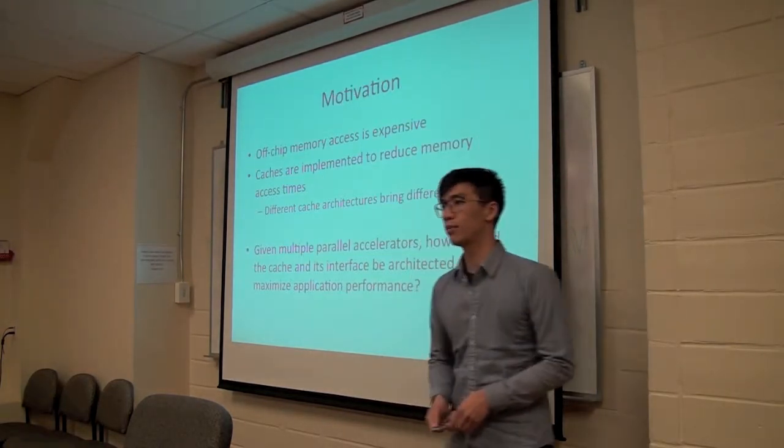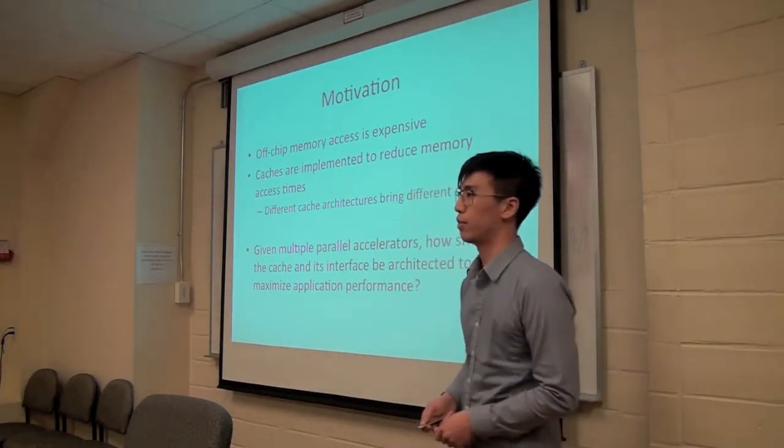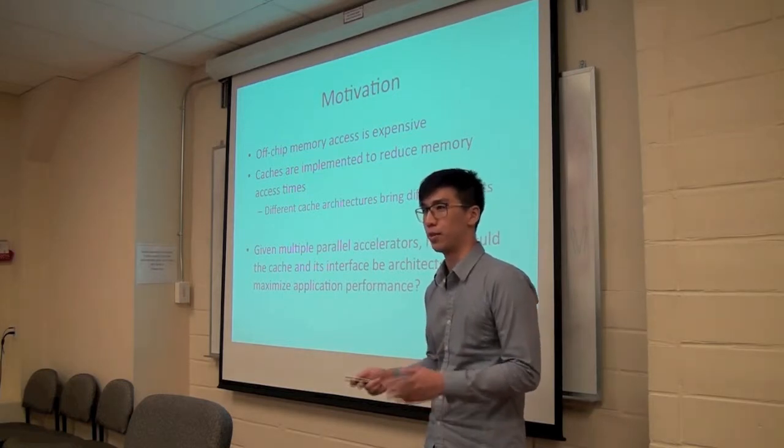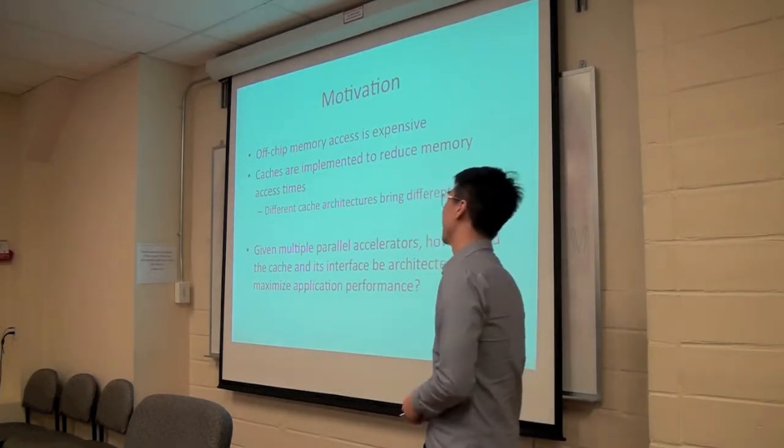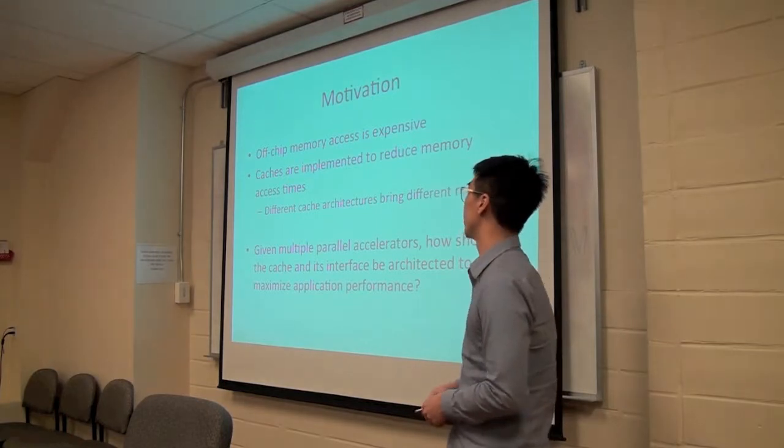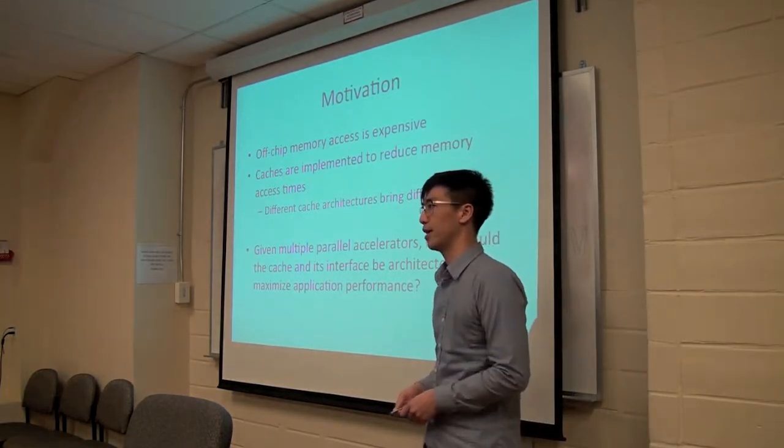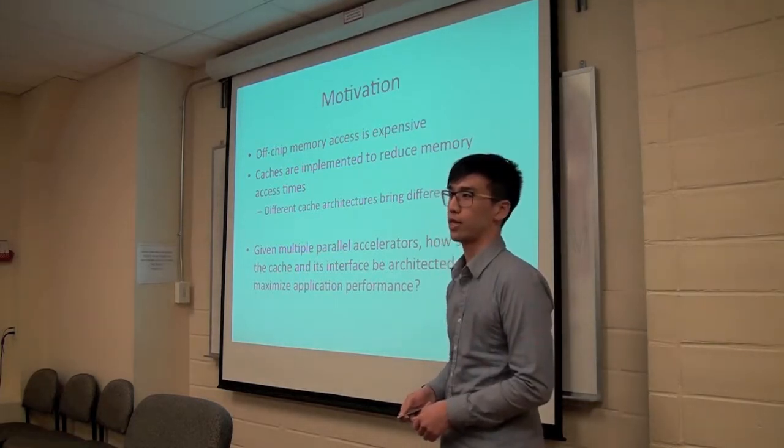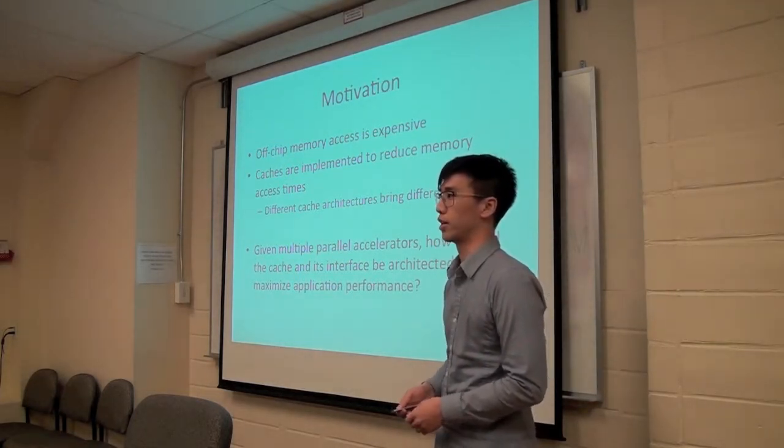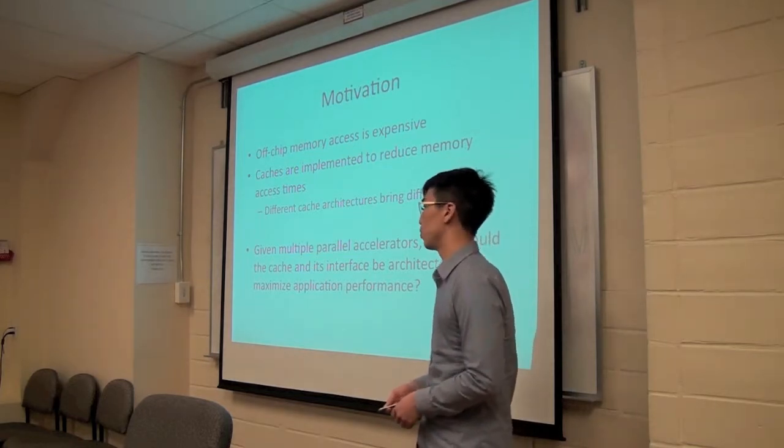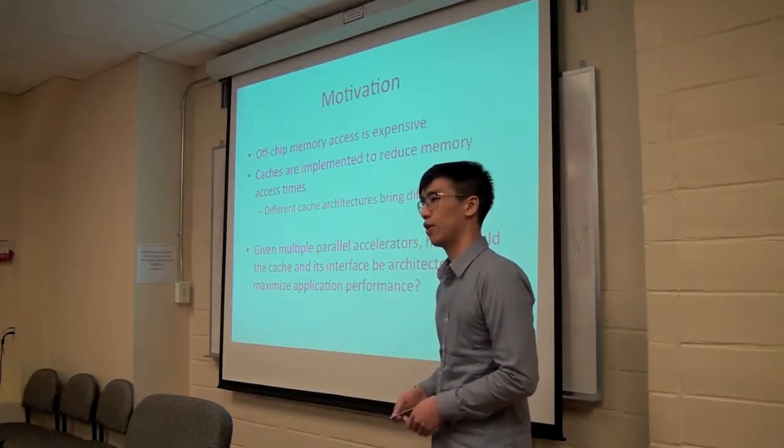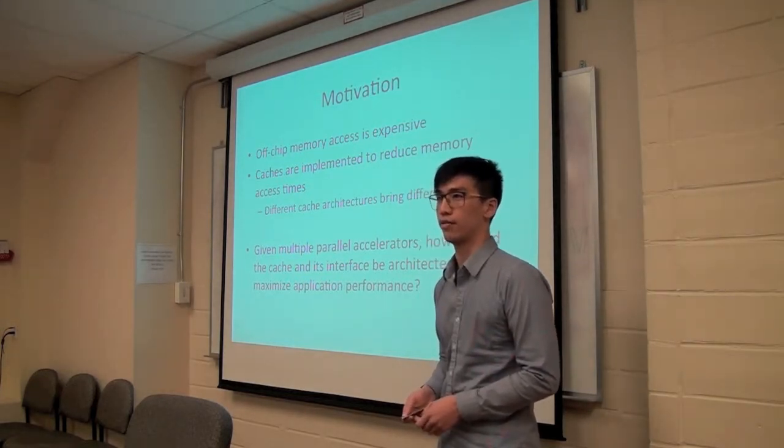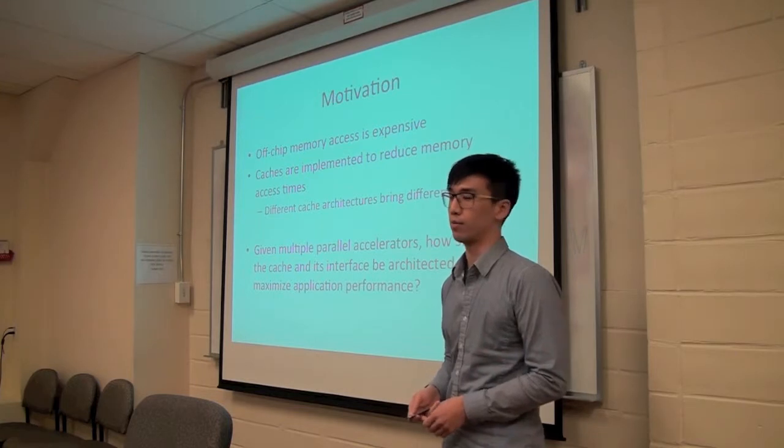So the underlying motivation for this work is that we all know off-chip memory access is very slow and even though FPGAs are maybe the greatest thing in the world, we cannot avoid this fact. So we can implement caches on FPGAs to reduce memory access times but different cache architectures can bring different results and application performance can largely depend on the cache architecture and its interface. So with this study we would like to answer the following question which is given multiple accelerators, how should the cache and its interface be architected to maximize application performance?